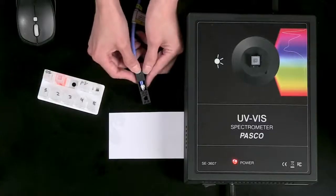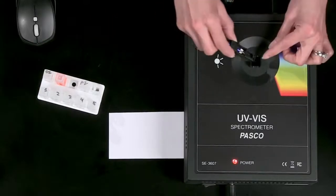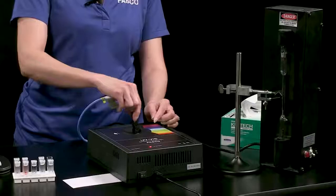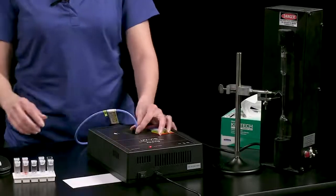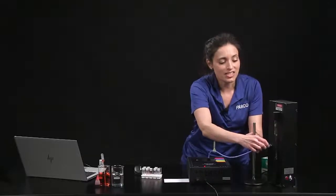To properly position the fiber optic cable, find the triangle on the cuvette housing and line it up with a notch on the cuvette holder on the spectrometer. Position the other end of the cable near your light source, but not touching.